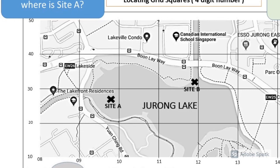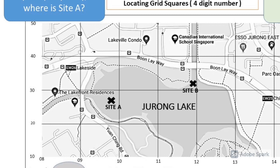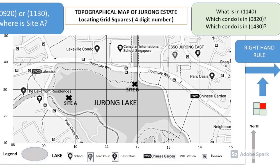Welcome back. For the first question — what is in grid square 1140 — look for easting 11, find the intersection point with northing 40, and in the top right-hand corner you will see that Canadian International School is in grid square 1140. For the second question — which condominium is in 0820 — easting 08 is the leftmost edge of the map. Move upwards to the intersection with northing 20; you only have two squares here, but using the same top right-hand rule, you will see that Lakefront Residences is the condominium. And lastly, for 1430 — look for easting 14, intersect with northing 30, top right-hand corner — you will see Park Oasis. The condominium in 1430 is Park Oasis.